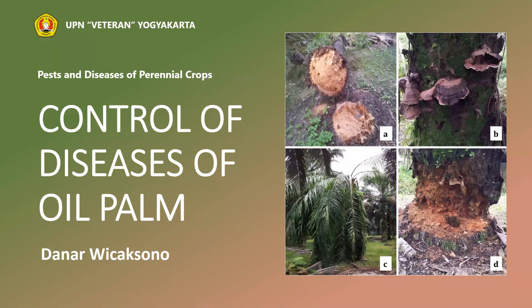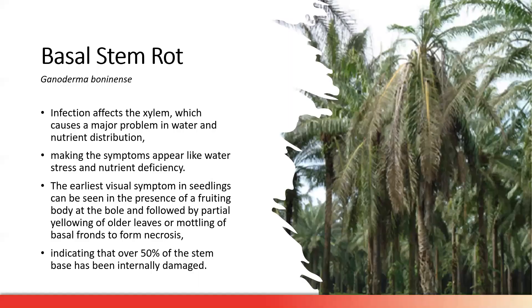Assalamualaikum warahmatullahi wabarakatuh. This lecture is about control of disease in oil palm. As we know, oil palm has the largest plantation area for industrial crops in Indonesia and also in Malaysia. One of the most serious diseases in oil palm is caused by Ganoderma — we call it basal stem rot, or in Indonesia, busuk pangkal batang. This is caused by a fungi called Ganoderma boninense.